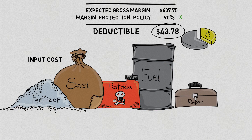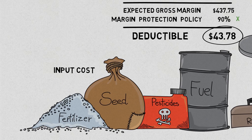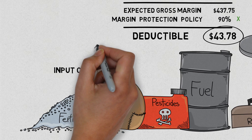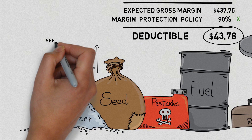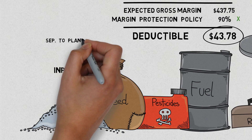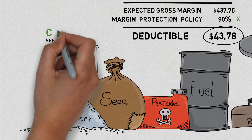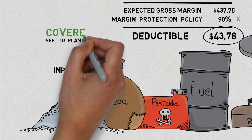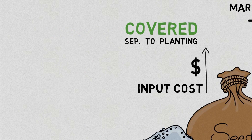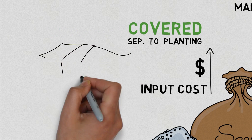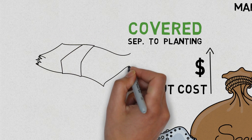Margin Protection is not designed to protect gross revenue like RP. It is designed to protect gross margin — the difference between gross revenue and input cost. For example, if input costs go up from September, when Margin Protection establishes expected input cost values, to planting time, you are covered. Never before have we seen coverage on margins for row crop farmers.